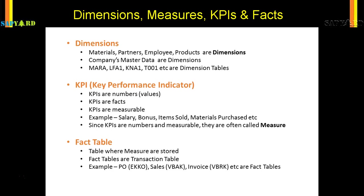The total items sold by the company, the total material purchased in a financial year or in a quarter, the salary you give to your employees, the bonuses you get — those are all KPIs. KPIs are measurable, and since KPIs are numbers which are measurable, they are often termed as measures. So dimensions are the master data, while measures are the transaction data that tell us about the numbers.